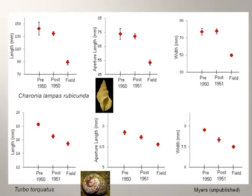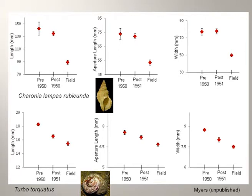Being able to predict change is critical in creating strategies that reduce negative effects, and the historical data held within our collections can play an important role in formulating these predictions. As a quick example, our collection has been utilised recently by University of Wollongong Honours student Sharon Myers to examine the possible evidence of human harvesting on intertidal gastropods. She looked at four species — the data of two species are shown in this slide — and she took measurements of shell length, aperture length, and shell width from representatives from our collection, together with measurements she made in the field. The utility of this data can be seen by the significant correlation she found in size decrease over time.